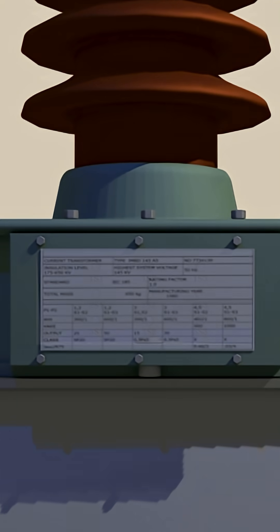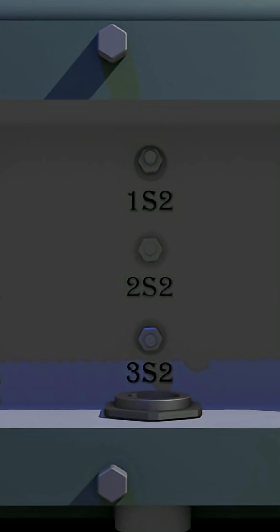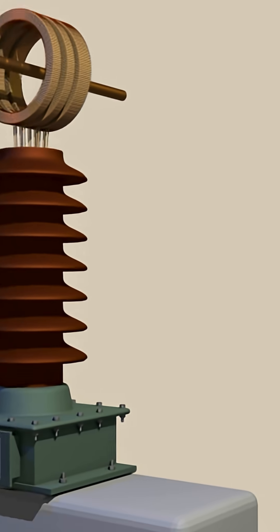This is the secondary terminal box. After opening the cover, we can see the secondary terminals here. But if there is more than one core, they could be placed side by side.